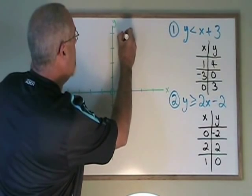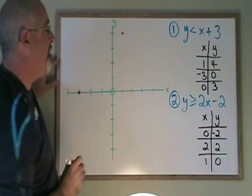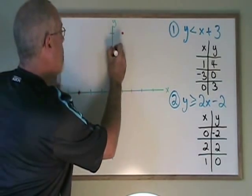1, 4 will be here, negative 3, 0 will be here, and 0, 3 will be here.